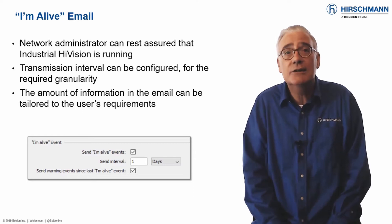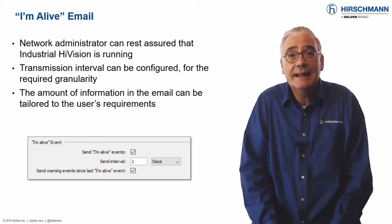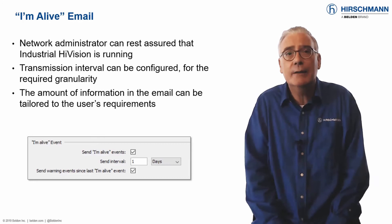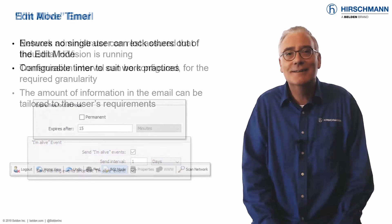Just configure Industrial HiVision to send you an 'I'm Alive' email. You can configure the sending interval to avoid email overload. You can even receive the latest warning events in the email. You decide which information you want and when you want it. No more uncertainty for you.